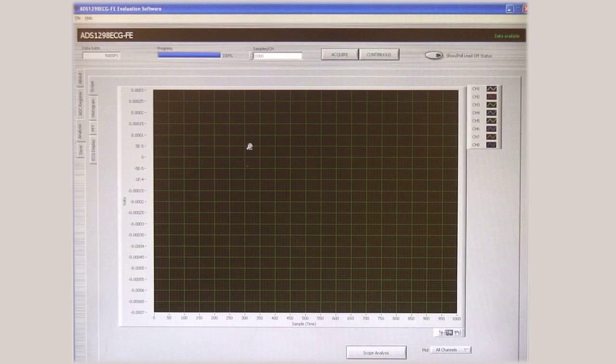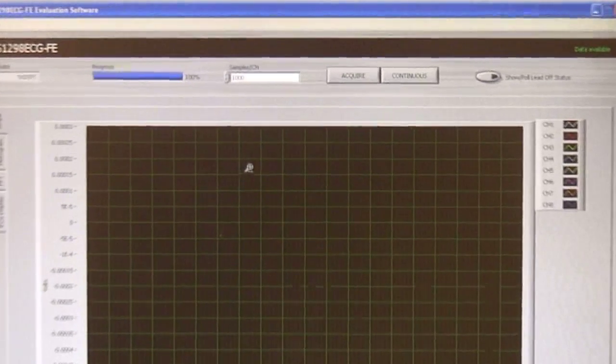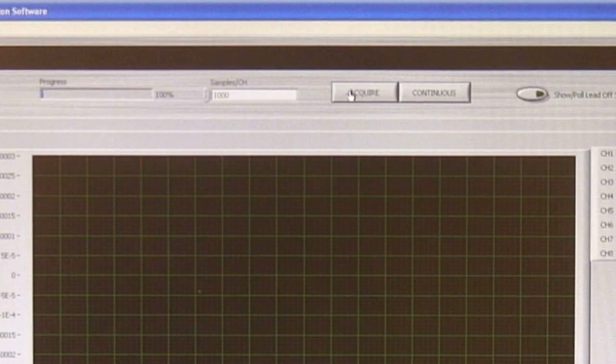Using the provided software all ADS1298 registers can be read from and written to. The device can be evaluated in many different modes and data can be taken and displayed. The software starts up the device with the inputs internally shorted. The extremely low input referred noise of the device can be evaluated in this mode. Just click on the acquire button to acquire data from the interface board.